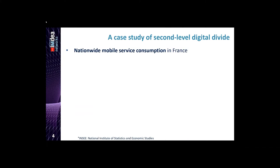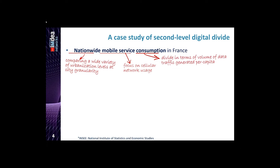Now let's move toward our case study. The statement 'nationwide mobile service consumption' summarizes the focus of our study. Nationwide means we compare the whole nation at once, with individual cities as the spatial granularity. Mobile service means we target only mobile cellular data for our analysis, and all assumptions made during analysis are based on mobile cellular data. Consumption depicts the type of divide we are looking for — we calculate the difference in volume of data traffic generated per capita across cities of France.